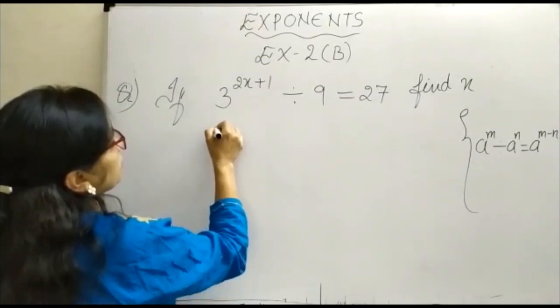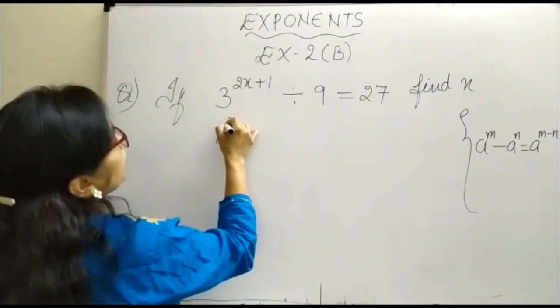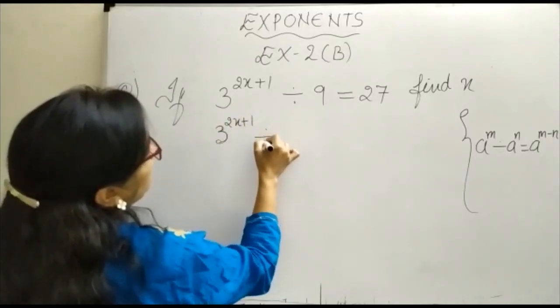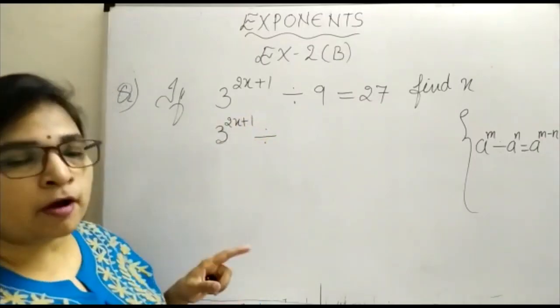This is 3, 2x plus 1. You can write this, divided by 9 can be written in the powers of 3.